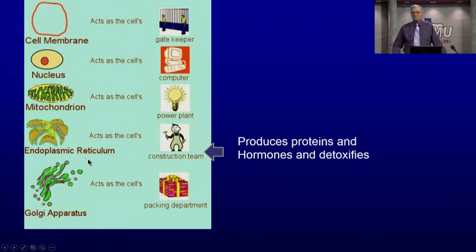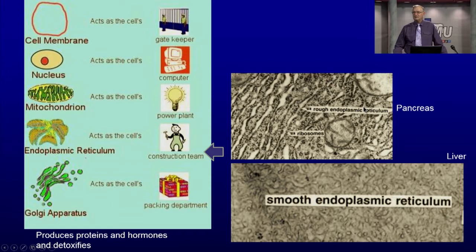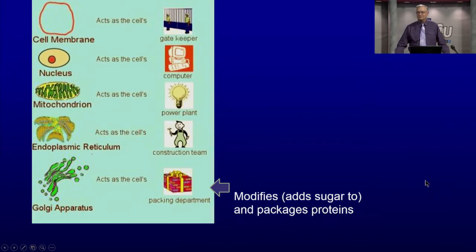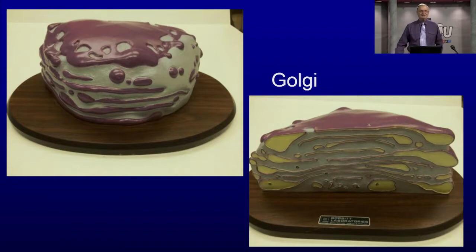In addition to mitochondria, we have endoplasmic reticulum — the construction team of the cell. They make proteins, hormones, and detoxify. You have rough endoplasmic reticulum with ribosomes on the surface making proteins, and smooth endoplasmic reticulum without ribosomes for detoxifying — for example, in the liver. Then we have the Golgi apparatus, which modifies and adds sugars as a packaging mechanism. It looks kind of like pancakes with different layers.